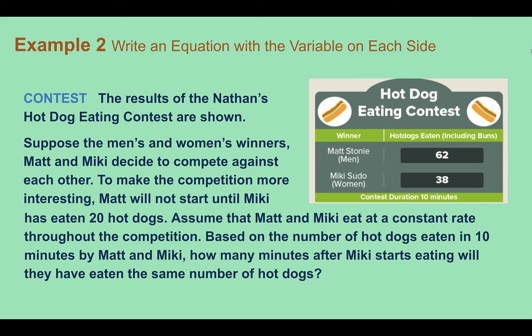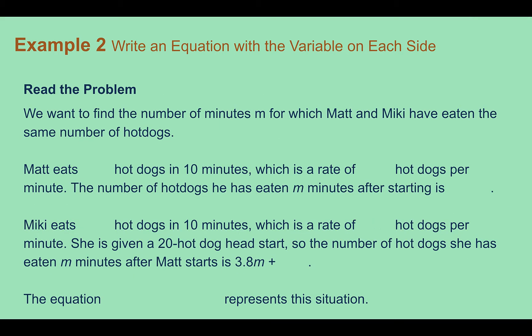Example 2: write an equation with a variable on each side. Our real-world context is a contest. The results of the Nathan's hot dog eating contest are shown. Suppose the men's and women's winners, Matt and Mickey, decide to compete against each other. To make the competition more interesting, Matt will not start until Mickey has eaten 20 hot dogs. Assume that Matt and Mickey eat at a constant rate. Based on the number of hot dogs eaten in 10 minutes by each, how many minutes after Mickey starts eating will they have eaten the same number of hot dogs?